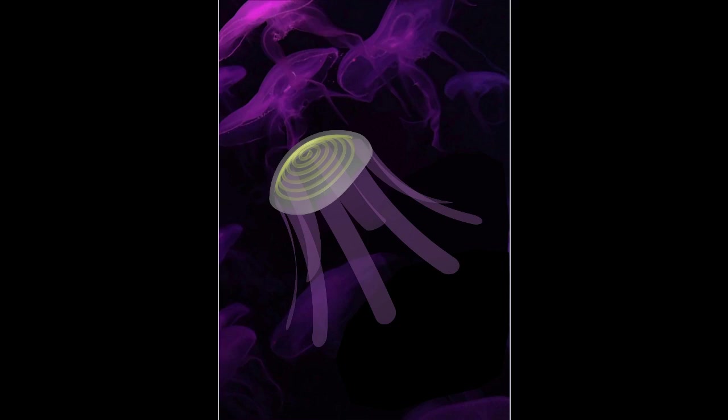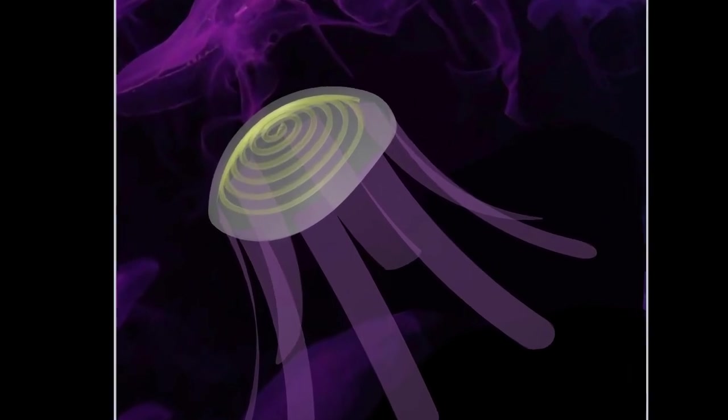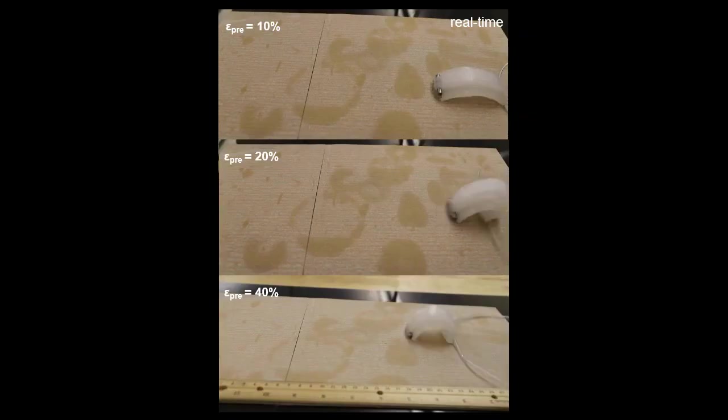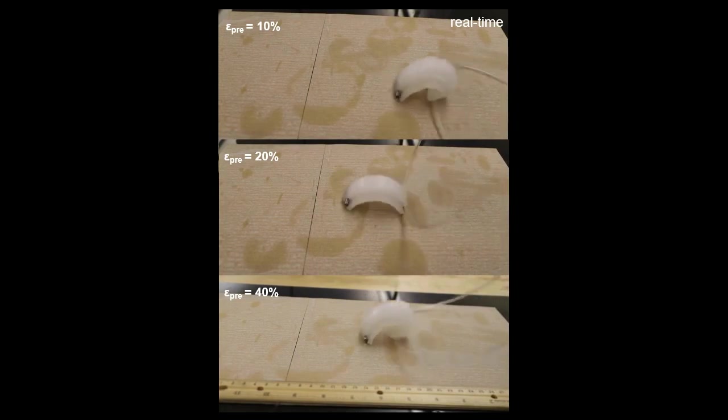The researchers created their new soft robots from two bonded layers of the same elastic polymer. One layer of polymer was pre-stressed or stretched. A second layer was not pre-stressed and contained an air channel. Here's how it works.